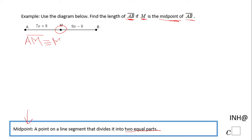It says AM congruent to MB, which is similar to this statement which says the measure of segment AM, or just simply AM, equals the measure of segment MB. And now we're going to replace this: AM of 7x plus 8 and then MB of 9x minus 8.